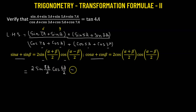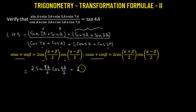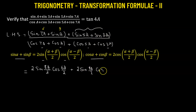Then for the next sum, sine 5a plus sine 3a, that will be 2 times sine of (5a plus 3a)/2, which is 8a over 2, multiplied by cosine of (5a minus 3a)/2, which is 2a over 2.